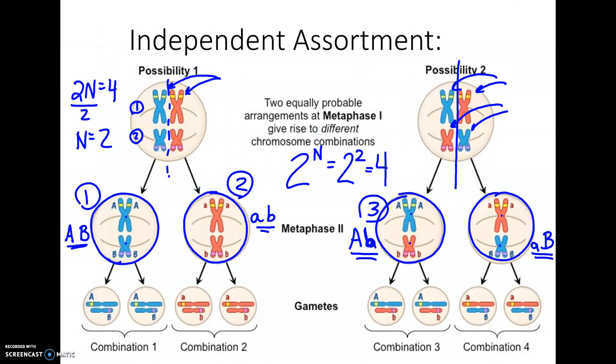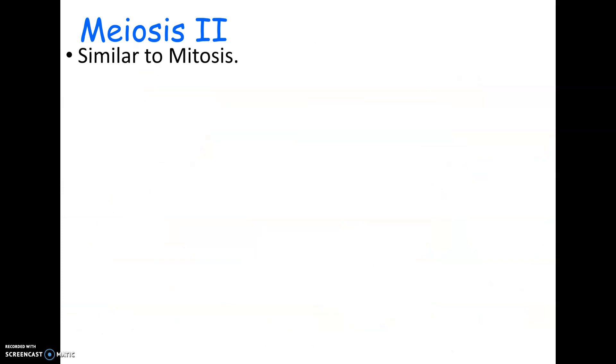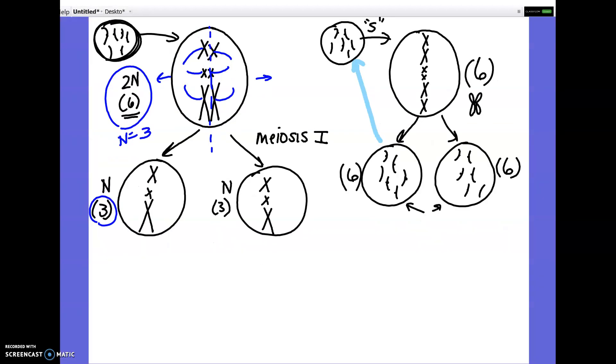All right, we're going to come back after we talk about meiosis 2. So now, in meiosis 2, this is going to be similar to mitosis. This is where your X's, your chromatids, are going to split and become chromosomes on their own. So they're going to split at the centromere. One is going to go to each side. And the chromosome number is not going to get cut in half again.